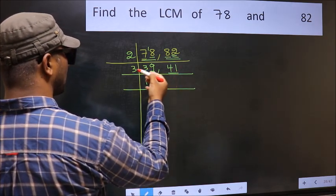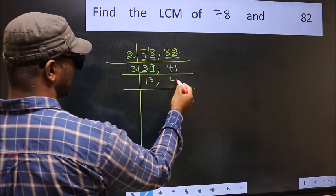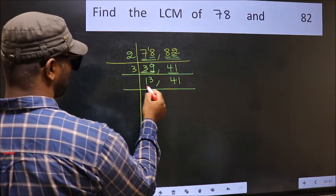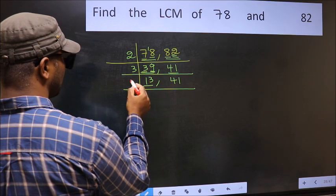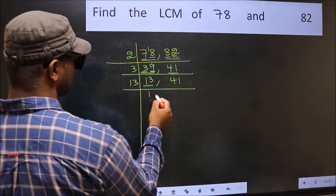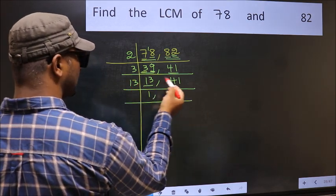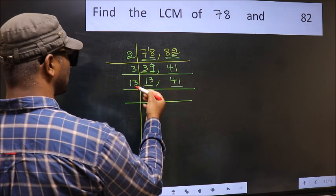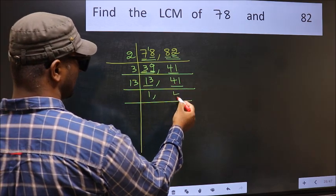The other number, 41, not divisible by 3, so you write it down as it is. Now, here we have 13. 13 is a prime number, so 13 ones, 13. The other number, 41, not divisible by 13, so you write it down as it is.